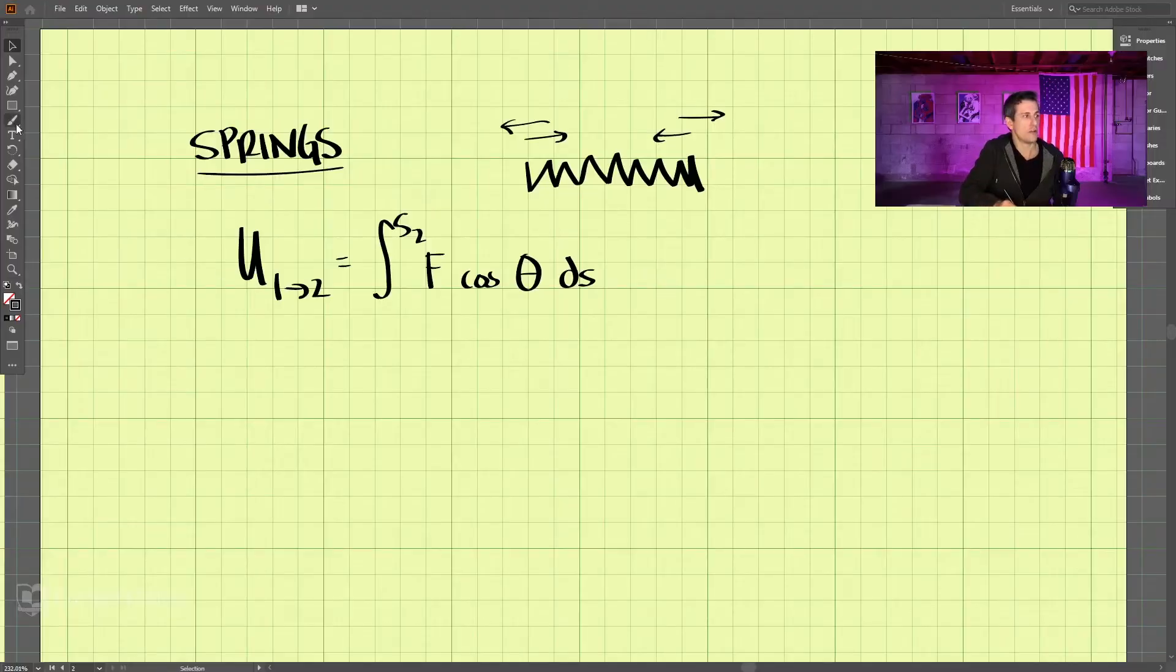Let's investigate this further. I've written the work equation for a spring here. We have f cosine theta ds and we integrate that from s1 to s2. Now, this is tricky because we know the further we stretch a spring, the more force it has in it. So this is not a constant force scenario.